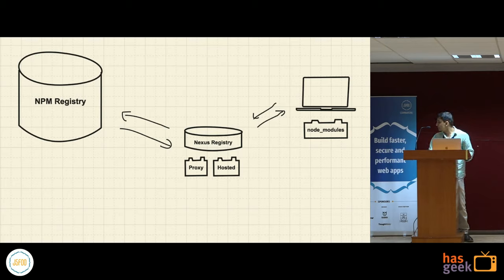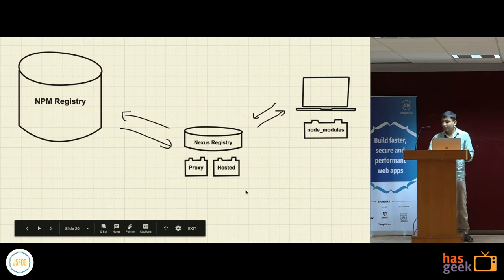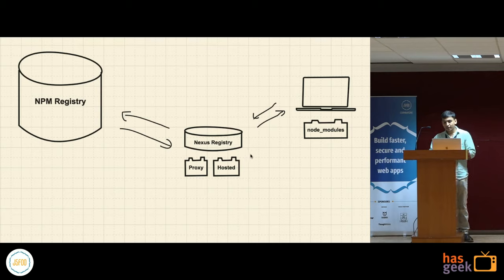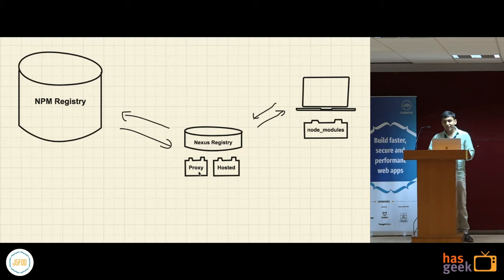The Nexus repository setup works like this: when you publish a module, it goes into the Nexus hosted registry via Travis. In our applications, when you do yarn install or npm install, it first checks Nexus hosted. If the package isn't available there, it fetches from the npm registry and caches it — acting as a proxy. Next time you do yarn install, it returns directly from the Nexus cache instead of hitting the npm registry.